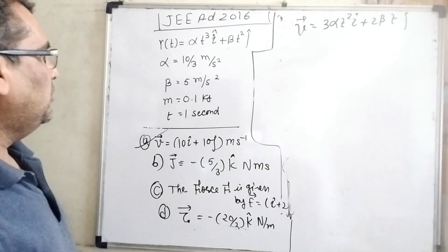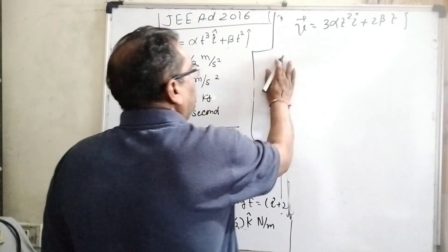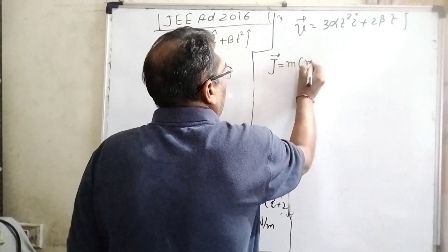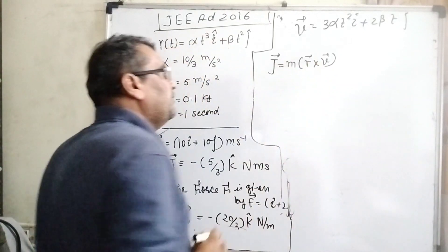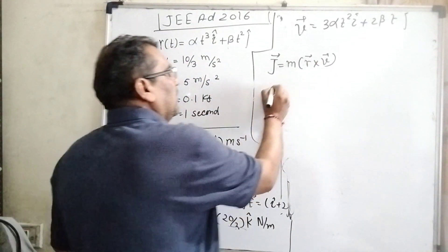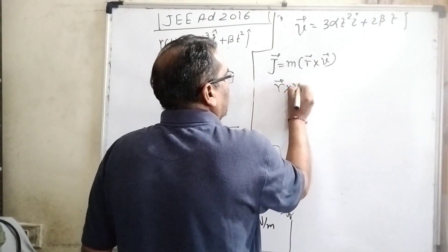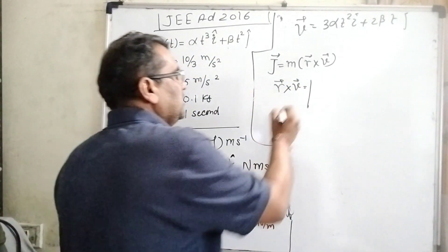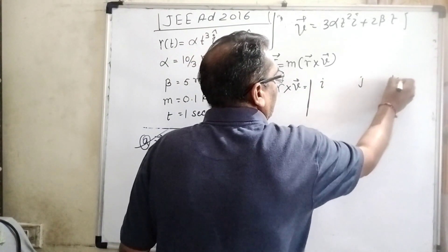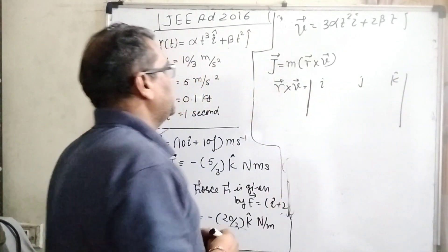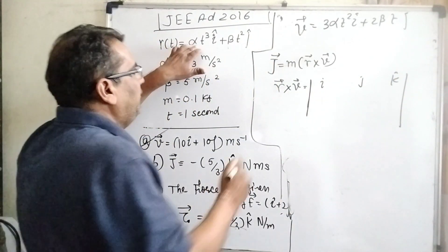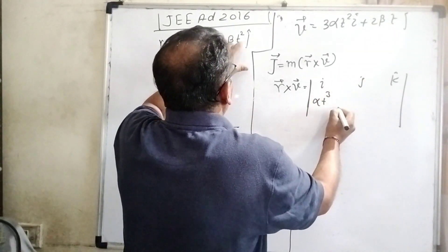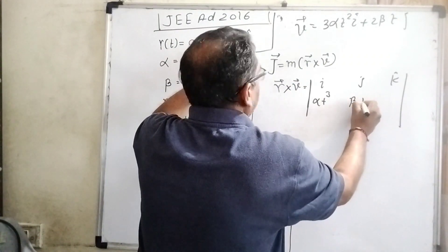Now we have to find out angular momentum. The formula of angular momentum is m r cross v vector. Let us first find out the cross product of r vector and v vector by using the determinants method.